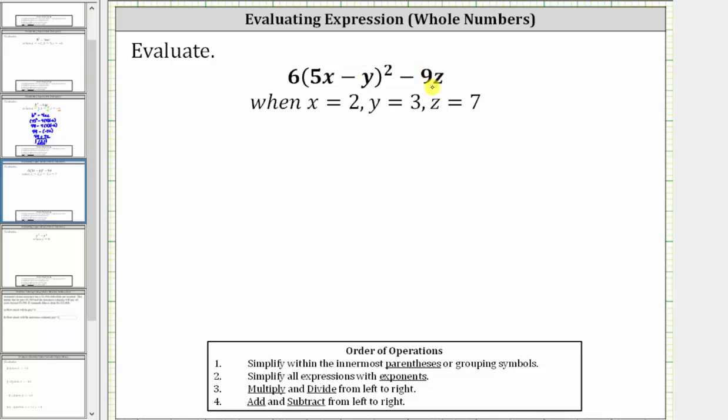We begin by performing substitution. We substitute 2 for x, 3 for y, and 7 for z. Then we evaluate the expression following the order of operations.